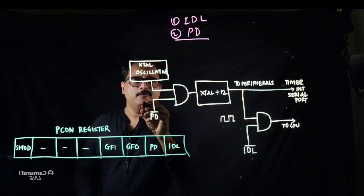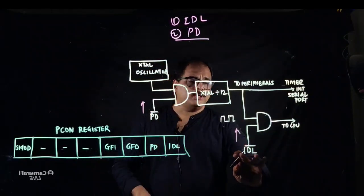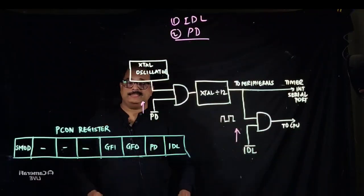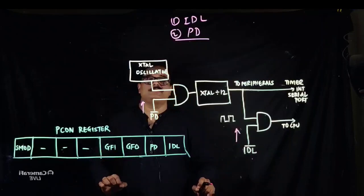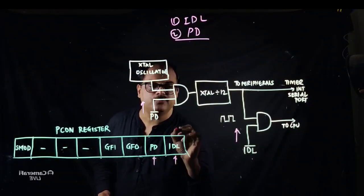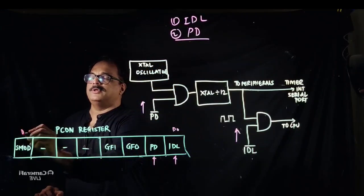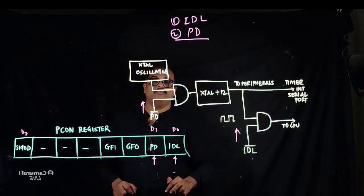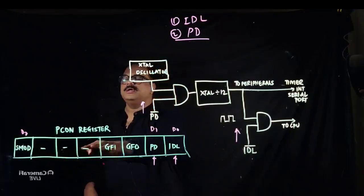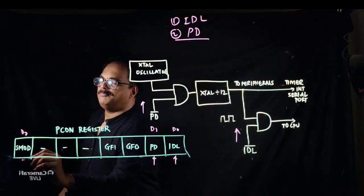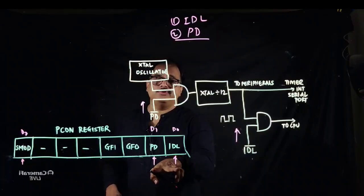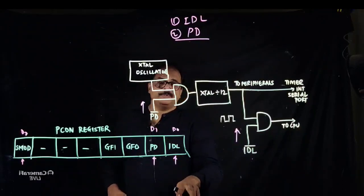Before going to the power down bit, we need to see where exactly you get the PD input and idle input. For that we need to look at the PCON register — the power control register of the 8051. Using this power control register we are going to control and save the power. We have to focus on the D1 bit and D0 bit. The bits GF1 and GF0 are user-defined flag bits, three bits are not used, and SMOD is used for doubling the baud rate in serial communication.